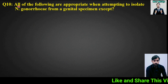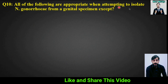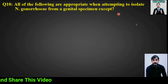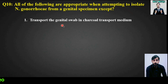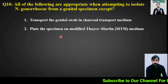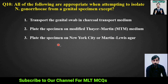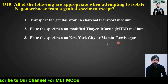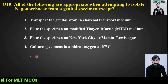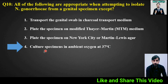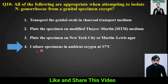MCQ number 10: All of the following are appropriate when attempting to isolate Neisseria gonorrhoeae from a genital specimen except — options: (1) transport the genital swab in charcoal transport medium, (2) plate the specimen on modified Thayer-Martin medium, (3) plate the specimen on New York City or Martin-Lewis agar, (4) culture specimen in ambient oxygen at 37°C. The right answer is option 4: culture specimen in ambient oxygen at 37°C.